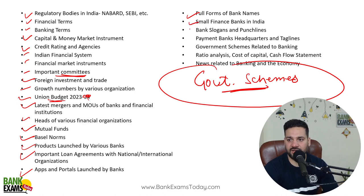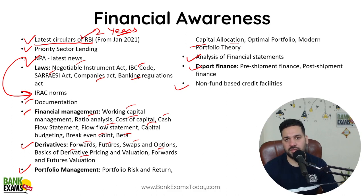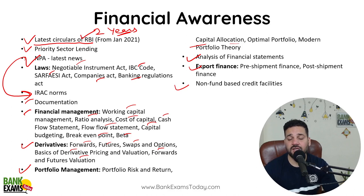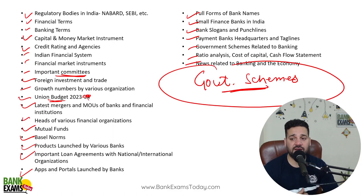Full forms of bank names, small finance banks, bank slogans, payment banks, government schemes — all very important. Every month we do the circulars analysis — there is a proper video, proper quizzes. Priority sector lending — whenever there is a major update, we redo the whole priority sector lending topic. I have already started with the IBC, SARFAESI, Companies Act. Negotiable Instruments Act and Banking Regulation Act we are going to do. IRAC norms I have recently done. Documentation we are going to do again.